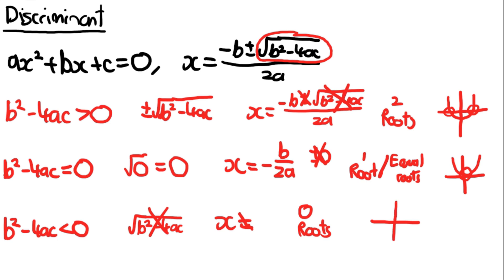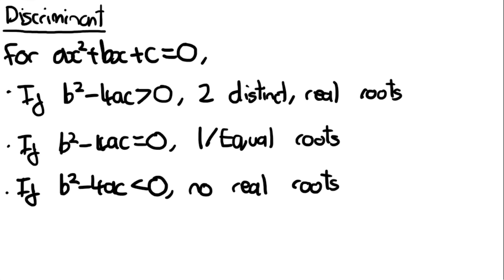This gives the typical graph where the parabola doesn't go near the x-axis at all and there are 0 roots. To summarise: for the quadratic ax squared plus bx plus c equals 0, if b squared minus 4ac is greater than 0, there are two distinct real roots. If b squared minus 4ac equals 0, there is one root, or equal roots. If b squared minus 4ac is less than 0, there are no real roots.